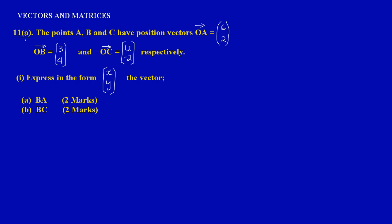Hi guys. Now in question 11a, a typical vectors and matrices section, section 2, on the May 2012 paper. Here it states the points A, B and C have position vectors where OA is equal to 6, 2; OB is equal to 3, 4; and OC is equal to 12, negative 2 respectively. They are asking us to express in the form X, Y the vector BA, which is easy two marks, and in part B, the vector BC, which is another easy two marks.